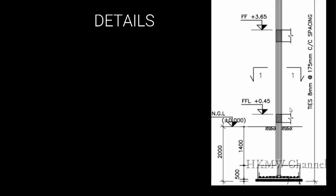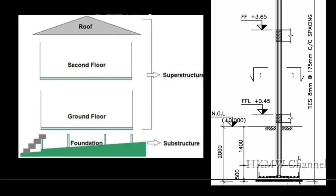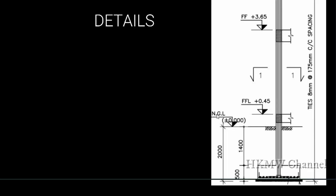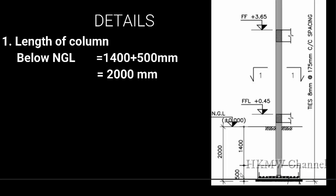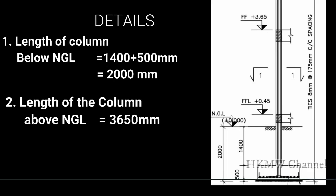The column extends up to two floors. Any structure is divided into two parts: below ground level is the substructure and above is the superstructure. The footing height is 500 mm, the remaining part is 1400 mm, totaling 2000 mm below the natural ground level (NGL). Above NGL, the plinth height is 450 mm, the finished floor level (FFL) is 0.45 m, and the first floor level is +3.65 m from NGL.